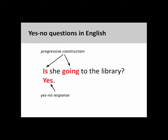Even when using progressive forms to ask yes-no questions, a conjugated form of the verb to be must appear in the first position. The progressive construction in English describes an ongoing event and consists of a conjugated form of the verb to be and the present participle of a verb, which is formed by simply adding an -ing ending. It is important to note that German does not have a progressive construction.